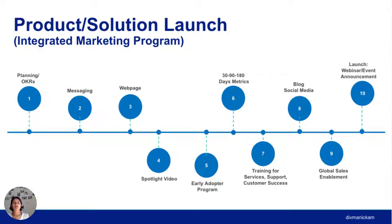You don't want surprises — you don't want teams to find out about a big launch when they see a press release or announcement. On launch day, this could be a webinar, an event, or an announcement. That's where everything comes together — from planning and strategy to go-to-market and execution. Post-launch, your 30, 90, and 180 days are when you track what was achieved, what didn't work as planned, and then iterate. Your launch is never done — it's a continuous journey.